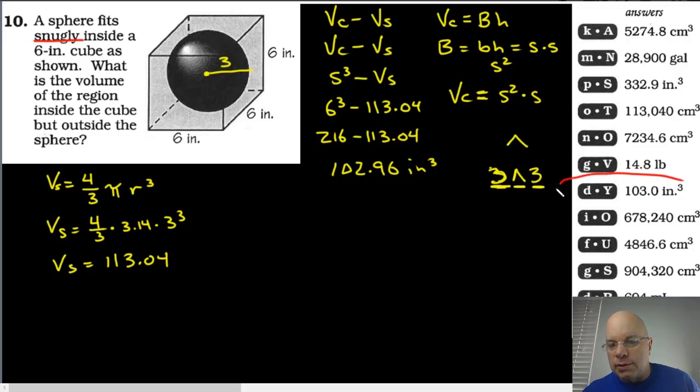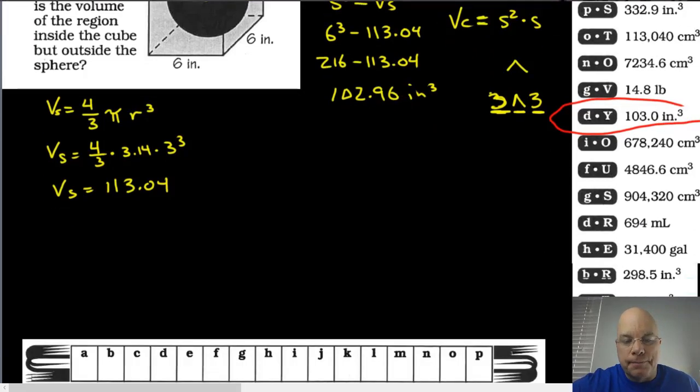And the way the puzzle works is you see the lowercase d and the uppercase Y. Down in this answer area where the lowercase d is, you just write the letter Y. And if you do that for each problem, it will spell out the answer to the riddle.